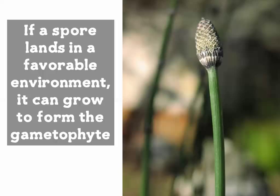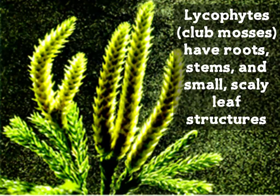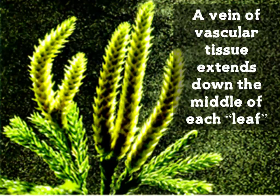The first division of seedless vascular plants is Lycophyta. The lycophytes are considered descendants of the oldest group of vascular plants. Fossil evidence suggests that at one point lycophytes grew to 30 meters tall or more around the Paleozoic era. Unlike true mosses, club mosses actually have roots, stems, and small scaly leaf structures which contain a vein that extends down the middle of each structure.